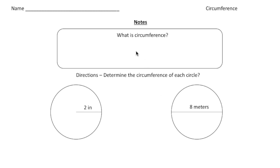So again, what exactly is circumference? Well, circumference is the distance around a circle. So let's write that in. It's the distance around a circle.